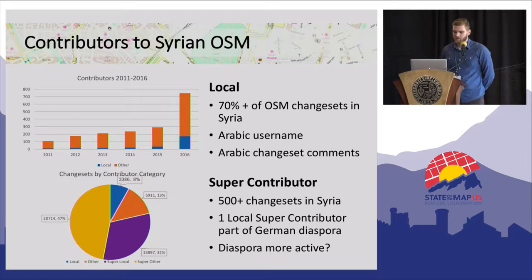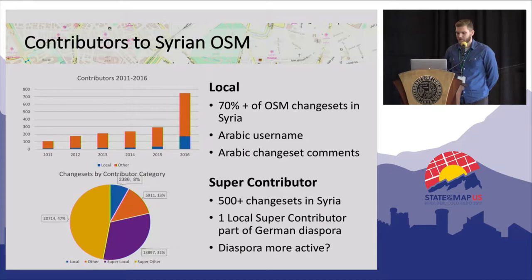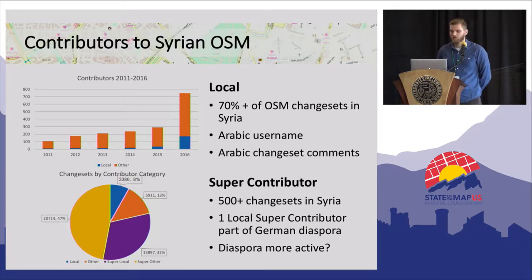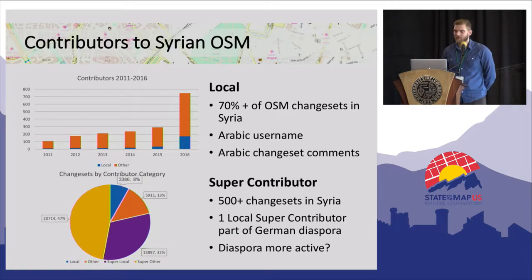Looking at the total number of contributions over time on the graph in orange, it's no surprise to see that a lot of them are likely not local. For contributors that made 500 or more change sets over Syria, we considered them super contributors. We only identified eight super contributors over Syria, and we estimate that seven of them are likely not local.